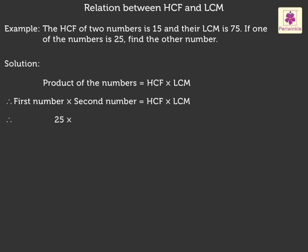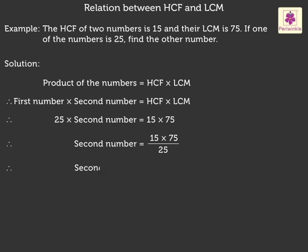25 multiplied by second number is equal to 15 × 75. Therefore, second number is equal to 15 × 75 divided by 25. Therefore, second number is equal to 45. Thus, the other number is 45.